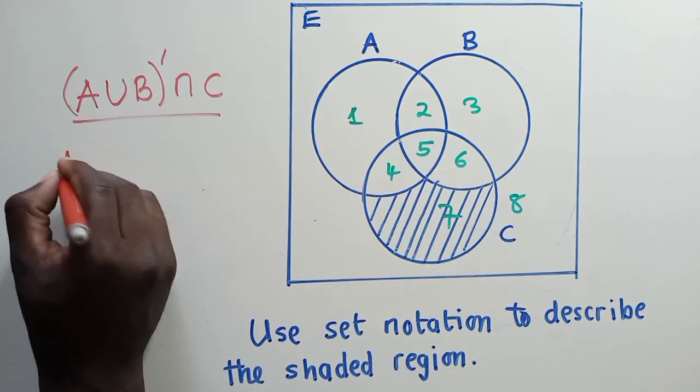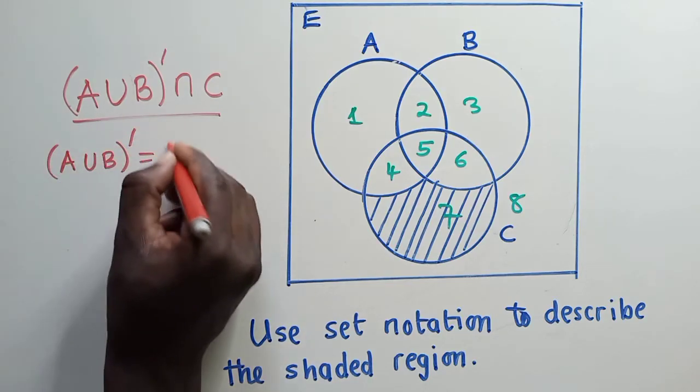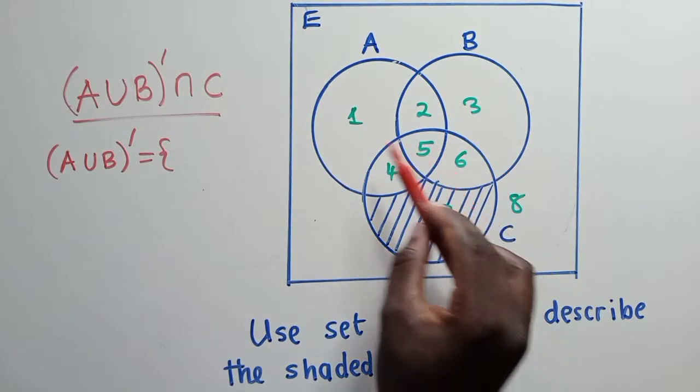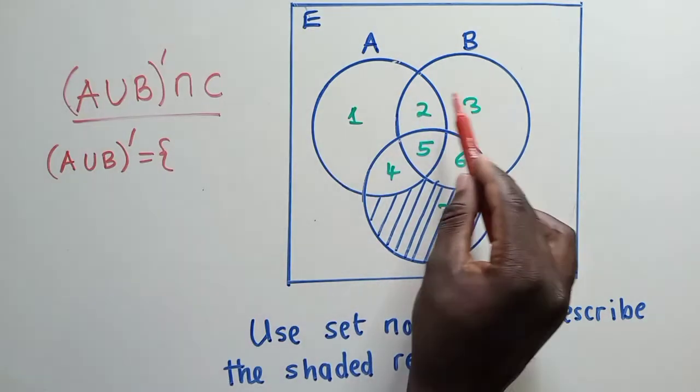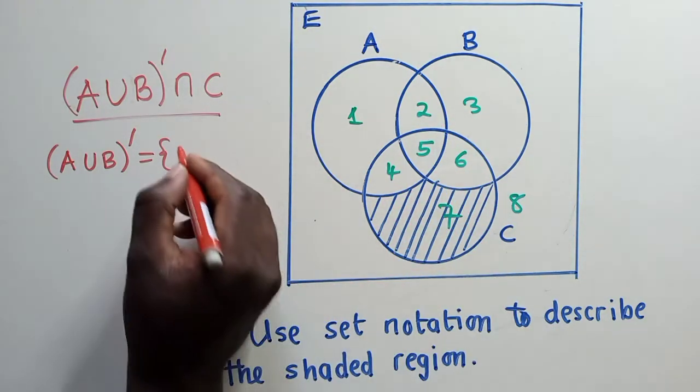So let's start with A union B complement. What is A union B complement? A union B complement meaning don't get what is found in A and B, or get what is outside A and B.